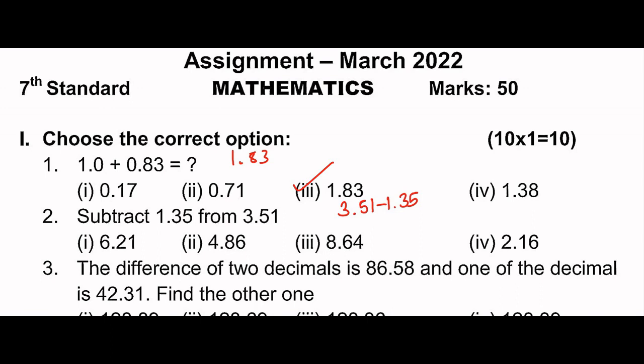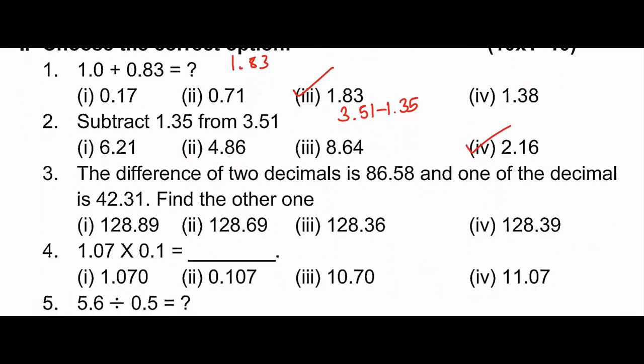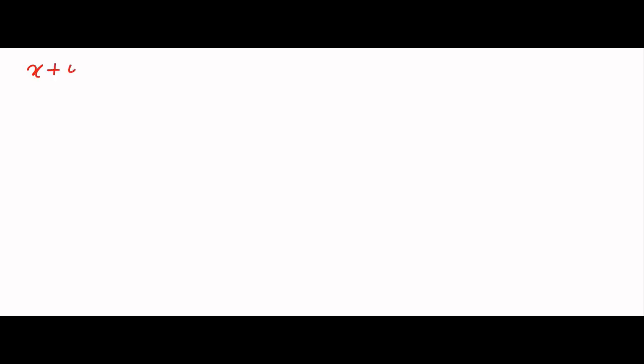Next question: the difference of two decimals is 86.58 and one of the decimals is 42.31. We add two decimals: x plus y equals 86.58. So x is one decimal and y is one decimal. If we add the two, the result is 86.58.